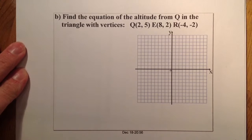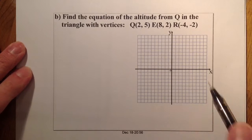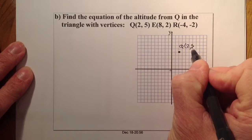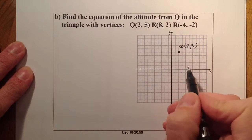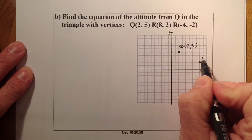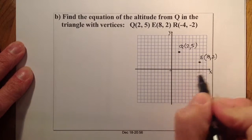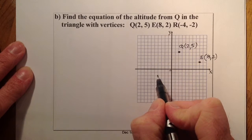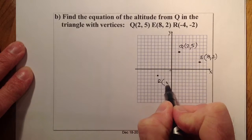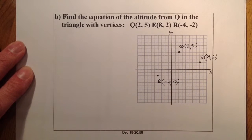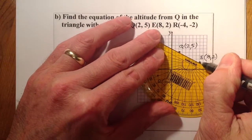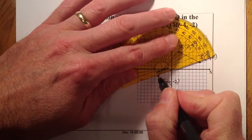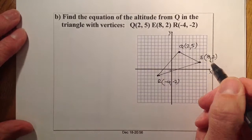Here's the solution for question 2. I'll plot the points. Q is (2, 5) — 2 along and 5 up. E is (8, 2) — 8 along and 2 up. R is (-4, -2) — that's the point R at (-4, -2). I'll sketch the triangle by joining those up.